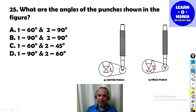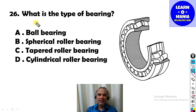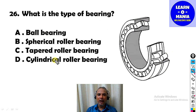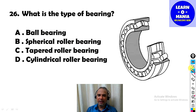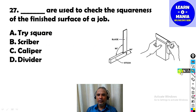Next MCQ: What is the type of bearing shown in the figure? The answer is option B — this is called a spherical roller bearing.